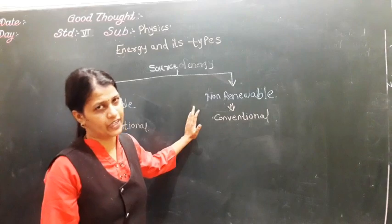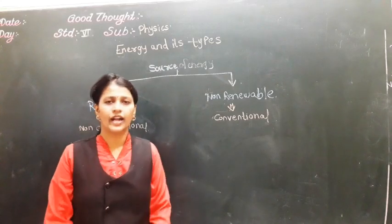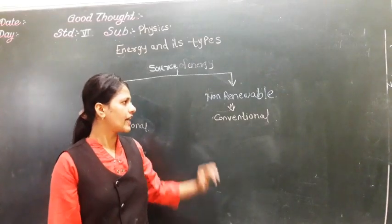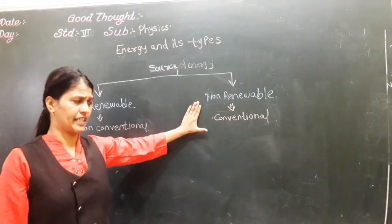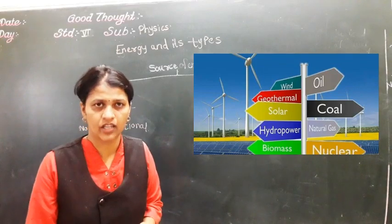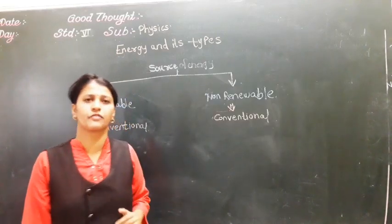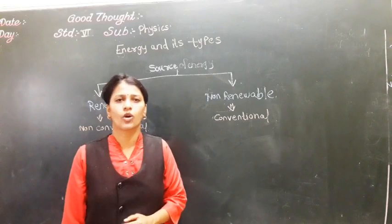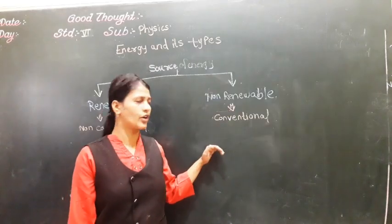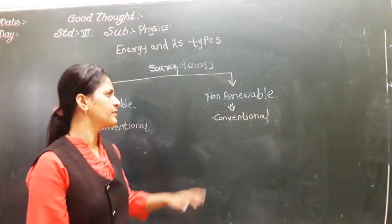Next is non-renewable source of energy. These are called conventional sources of energy and they are very limited. For example, fossil fuels like petrol and diesel — they are very limited sources of energy. You have to use them very properly.